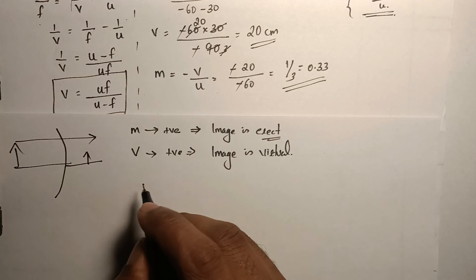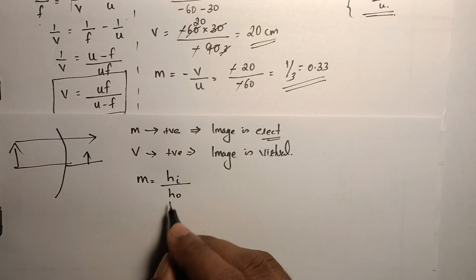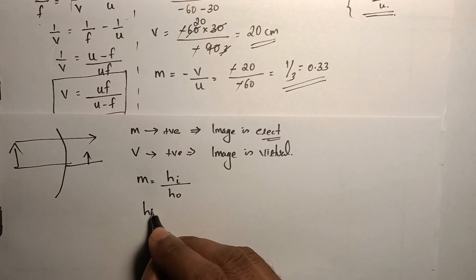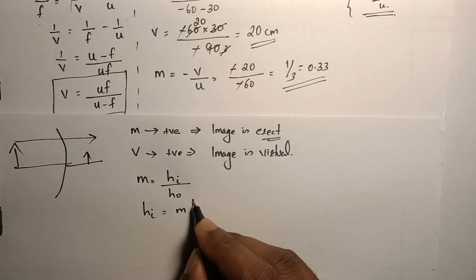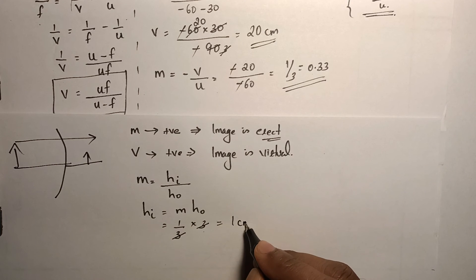Also, we will find out the size of image. Magnification by definition is height of image by height of object. On cross multiplying, height of image is equal to magnification times height of object. Magnification, we got it as 1 by 3 and height of object is given in the question as 3. 3 and 3 got cancelled and becomes 1 centimeter.